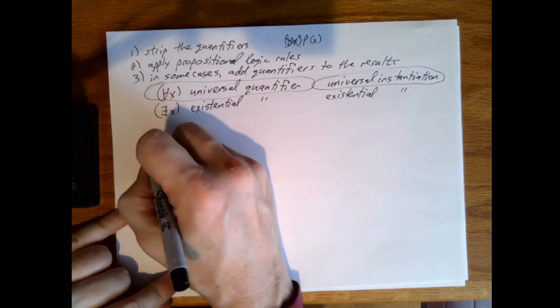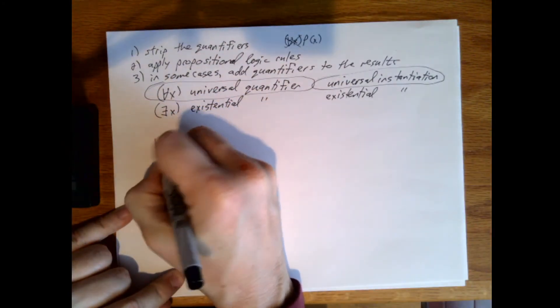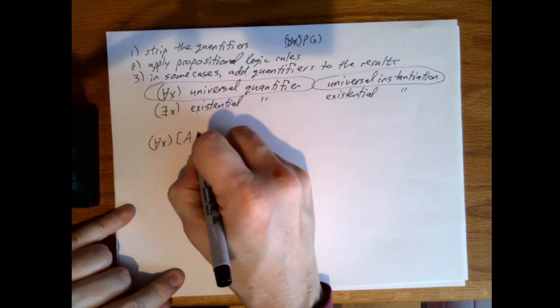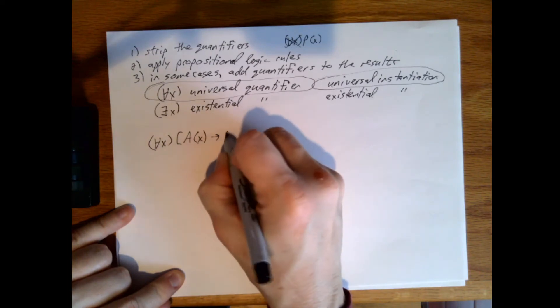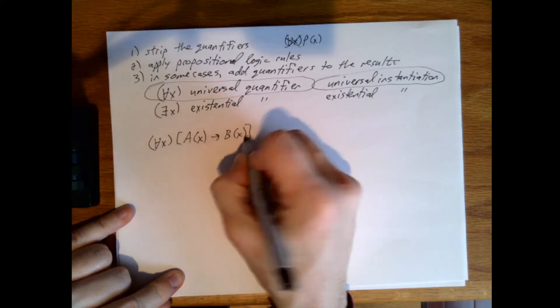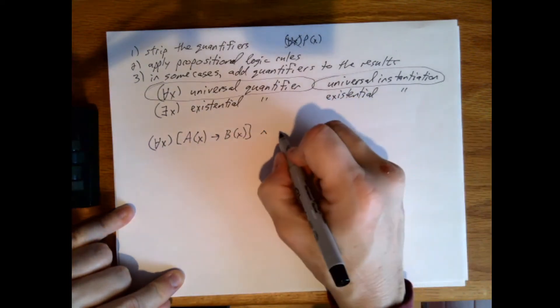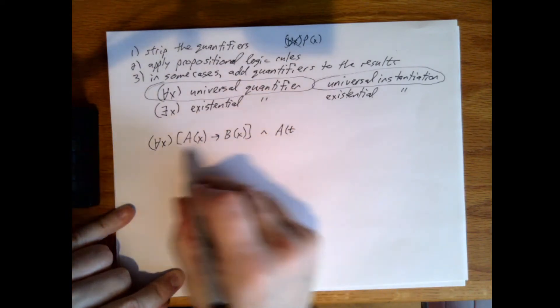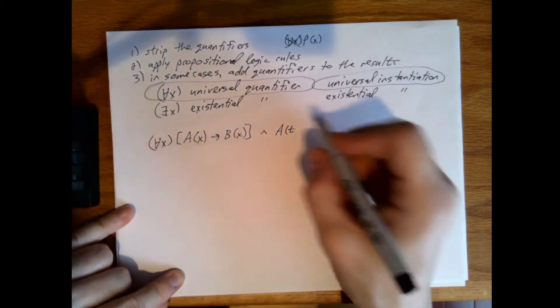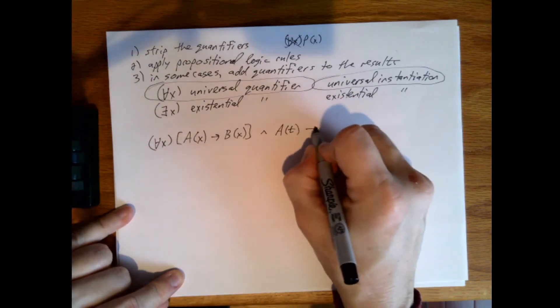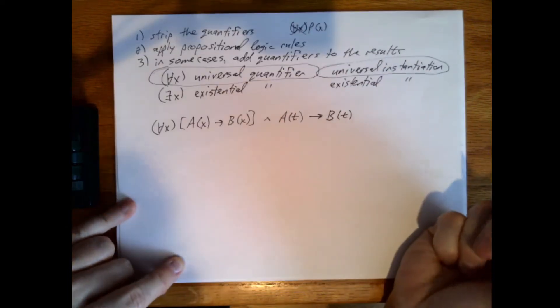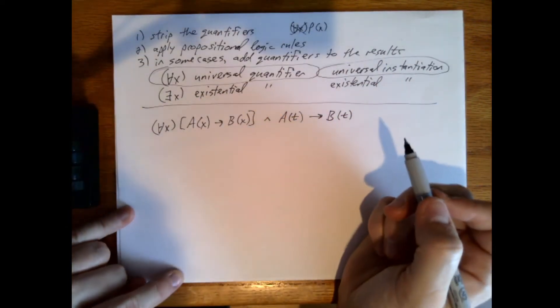For all x, if a of x implies b of x, and we have a specific value t from the domain that x is drawn from, then we will show that b of t is true. So how do we do that?